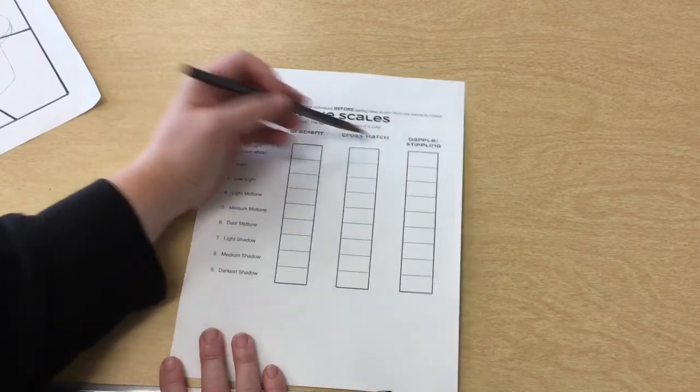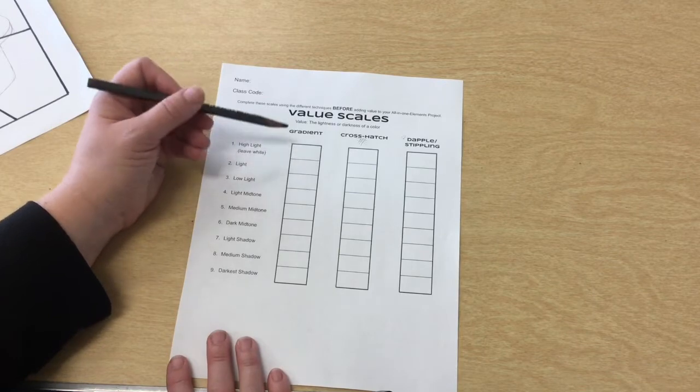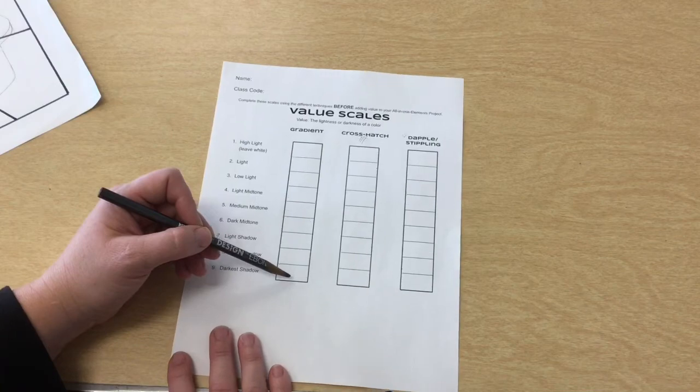For all of these the very highlight is where you leave things white. The most important thing I think when you do value is that you leave areas white and then you get areas that are as dark as possible.